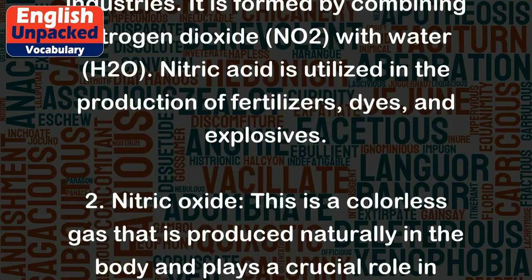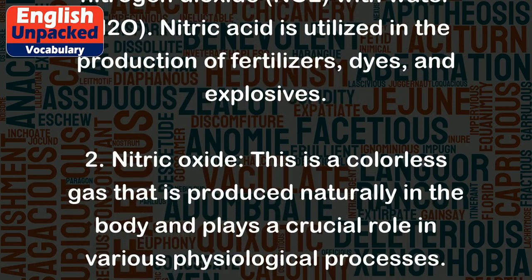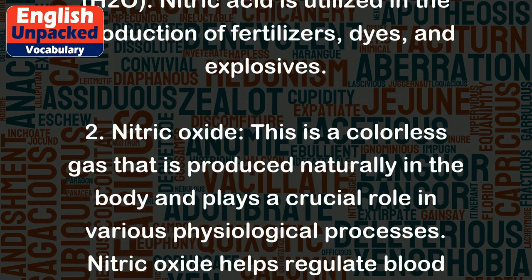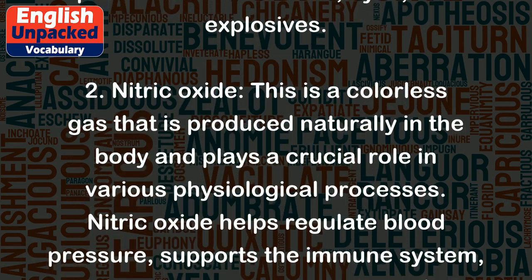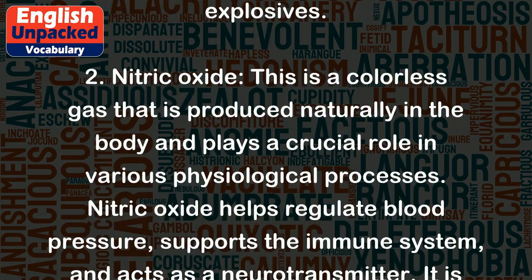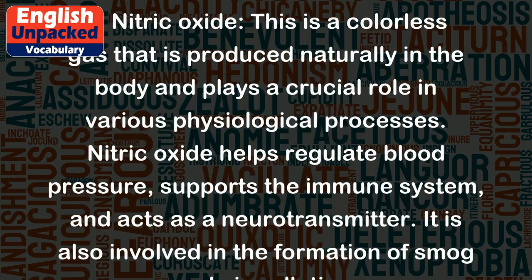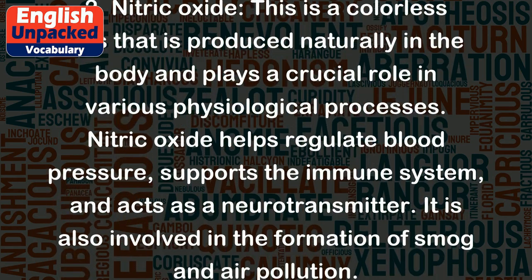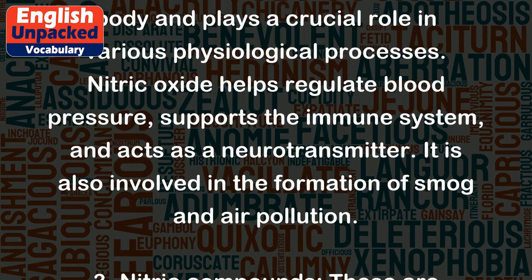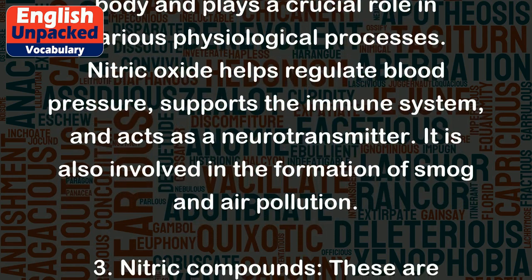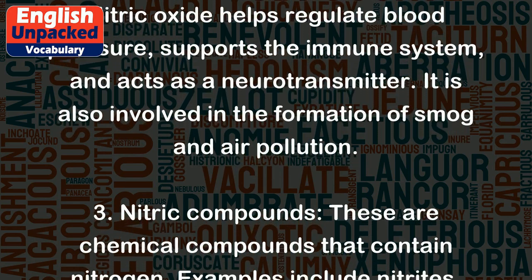2. Nitric oxide. This is a colorless gas that is produced naturally in the body and plays a crucial role in various physiological processes. Nitric oxide helps regulate blood pressure, supports the immune system, and acts as a neurotransmitter. It is also involved in the formation of smog and air pollution.